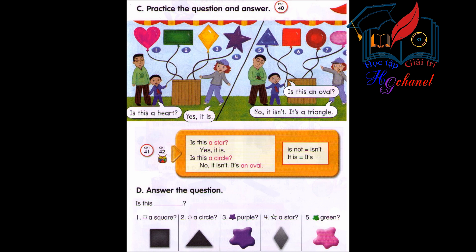Is this a triangle? No, it isn't. It's a square. Is this a star? Yes, it is. Is this a rectangle? Yes, it is. Is this a square? No, it isn't. It's a circle. Is this a heart? Yes, it is. Thank you.